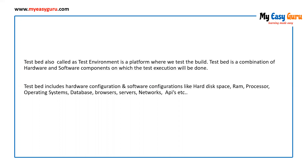So test bed includes hardware and software configurations like hard disk, RAM, processors, and software configurations like operating systems, databases, browsers, APIs, networks, etc. These configurations depend upon the type of the application we are going to test. If we have to test a desktop application, we will be concentrating on both hardware and software configurations, operating systems, and versions of the operating systems.